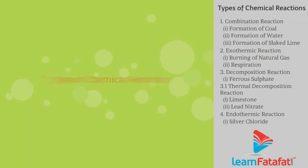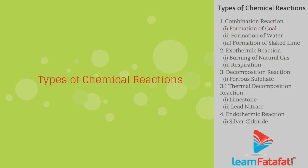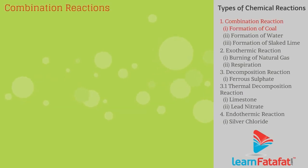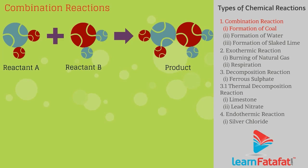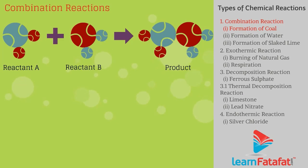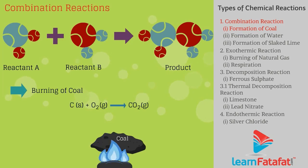Types of chemical reactions. Combination reaction: A reaction in which a single product is formed from two or more reactants. Example one — burning of coal: C + O2 → CO2.